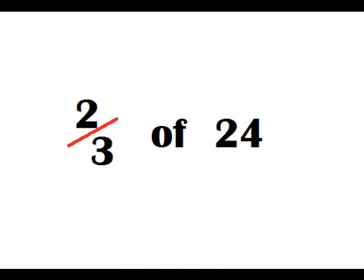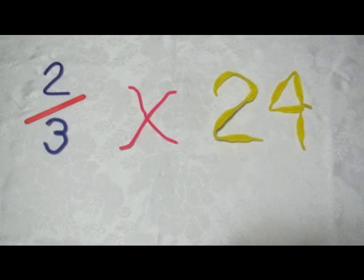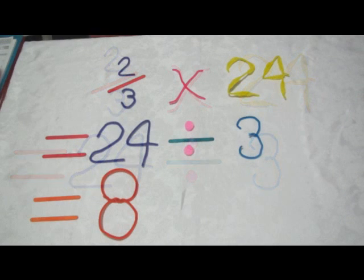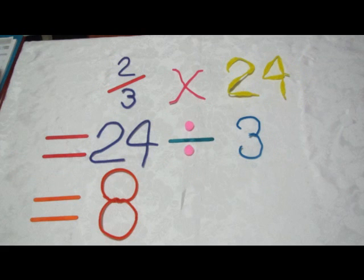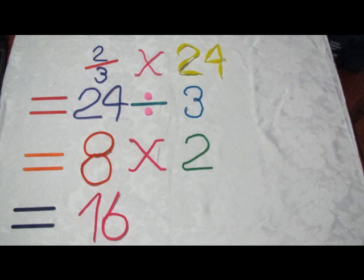Let's try a different question. Let's find what 2 thirds of 24 is using method 1. 2 thirds of 24 is 2 thirds times 24. First, we divide the whole number by the denominator: 24 divided by 3, which equals 8. Next, we multiply the answer, 8, by the numerator. So 8 times 2, which equals 16. So 2 thirds of 24 is 16.